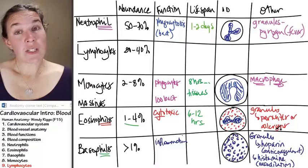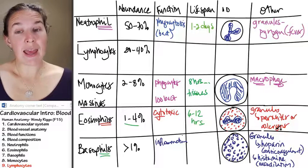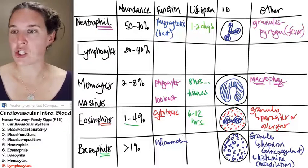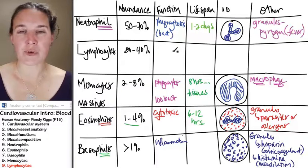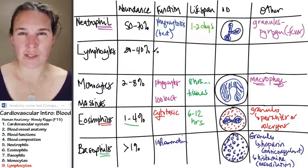Lymphocytes are the second most abundant white blood cell, and their entire job is about acquired immunity. So let's take a second with that.